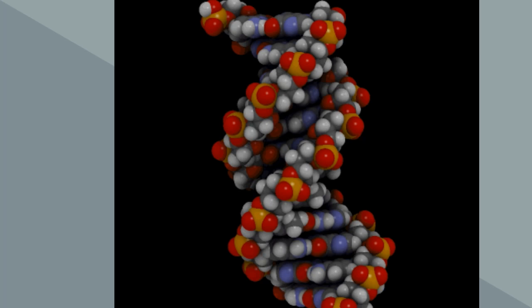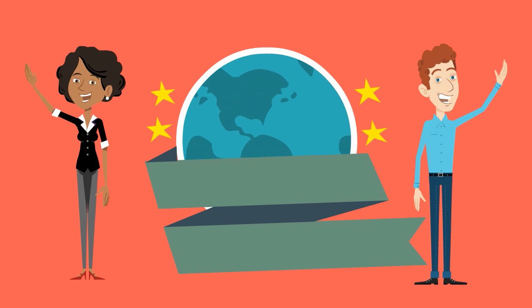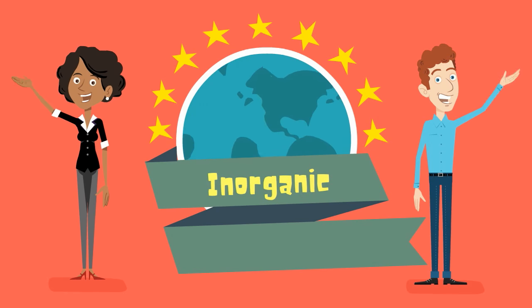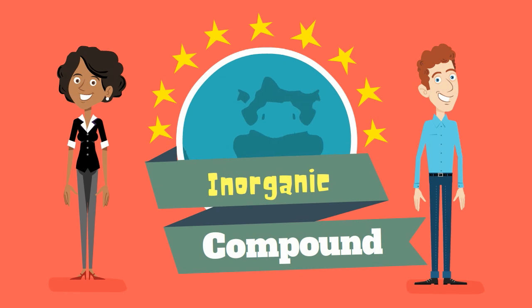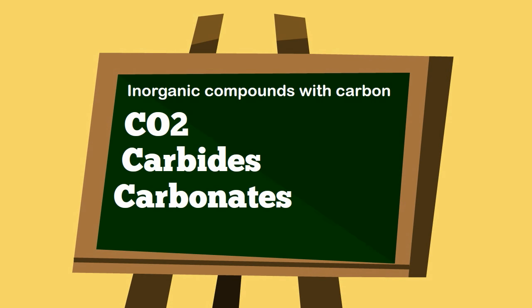Organic compounds can be very large and complex. A compound that does not contain carbon and is usually simple is called an inorganic compound. There are exceptions to this, such as carbon dioxide, carbides, carbonates, and cyanides. But generally, inorganic compounds do not contain carbon and are more simple than an organic compound.